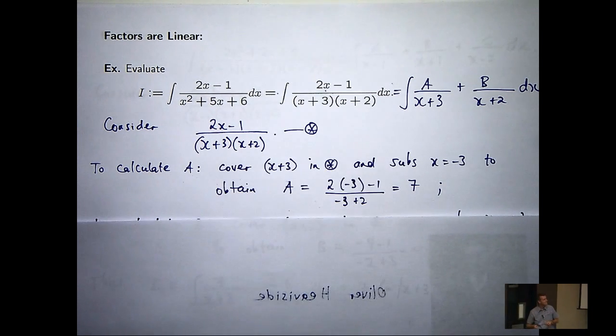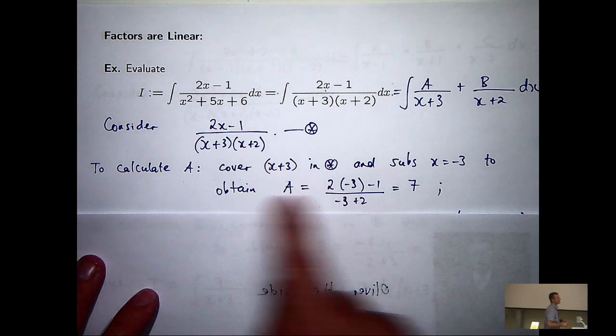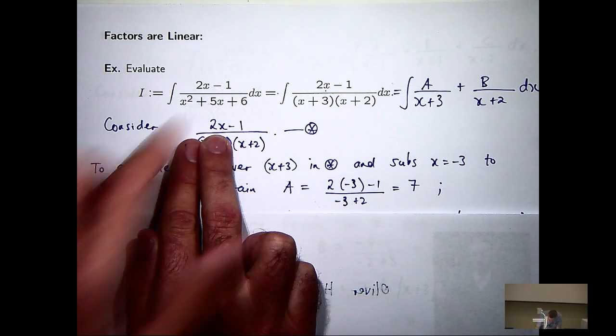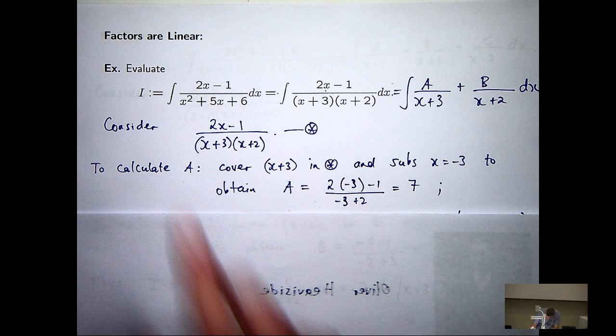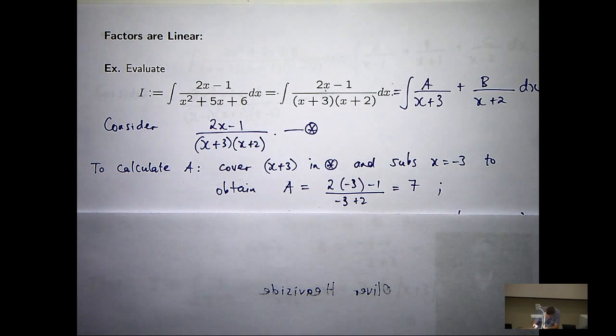All right? So essentially, that's what I did in the next line. I covered up that, substitute in x equals minus 3, and then that gives me my constant A.